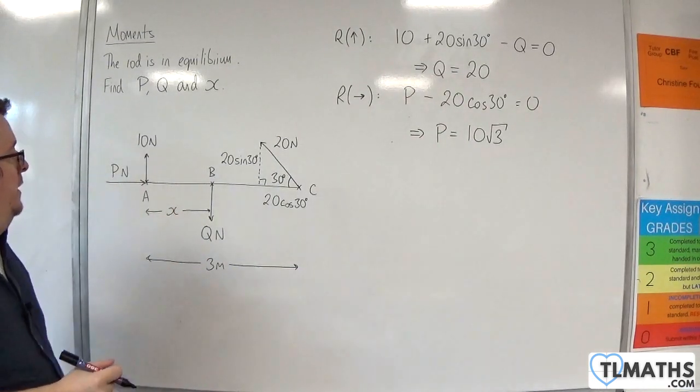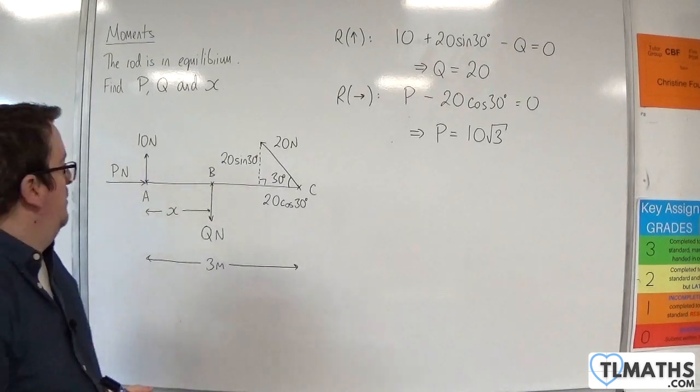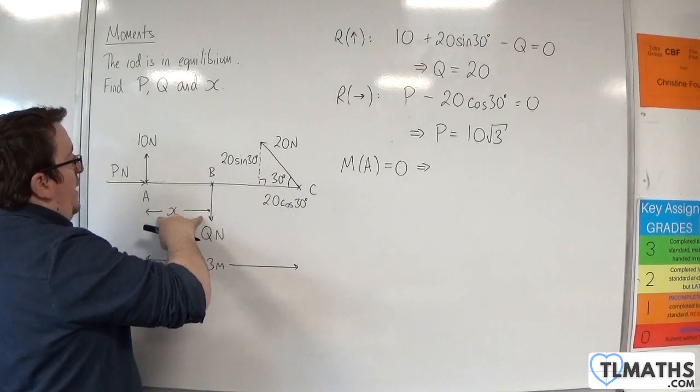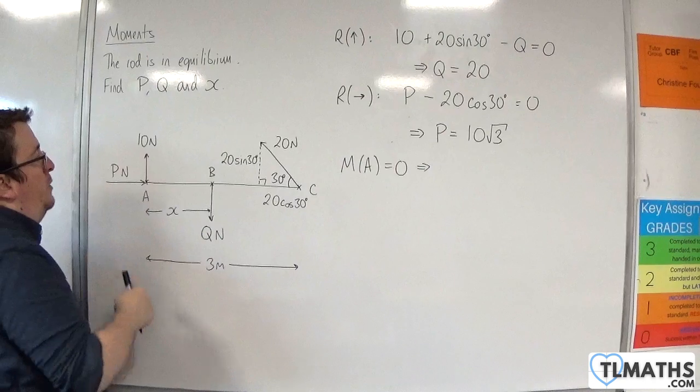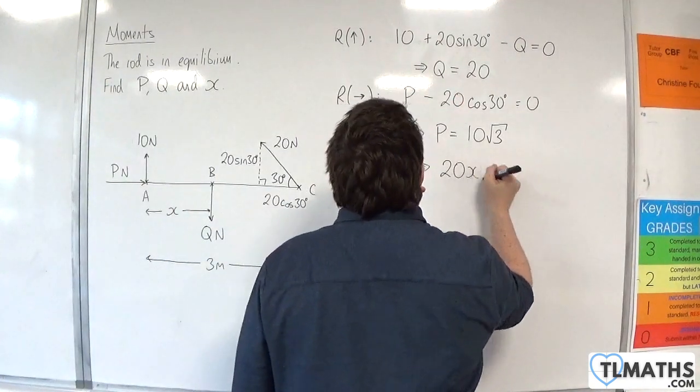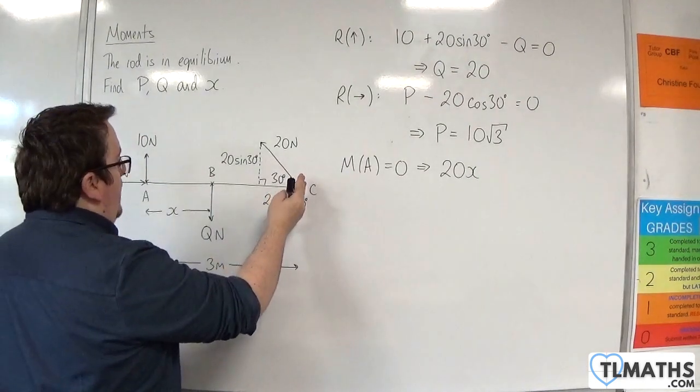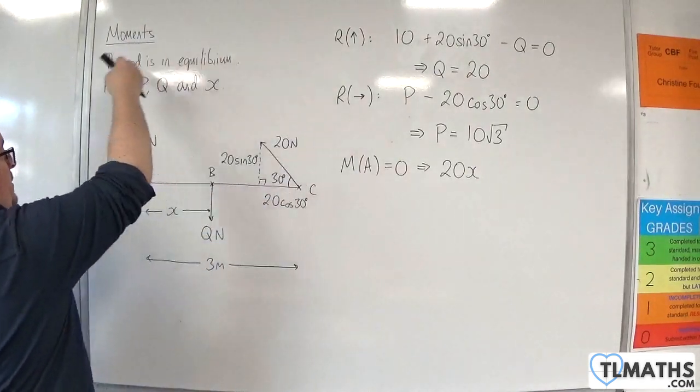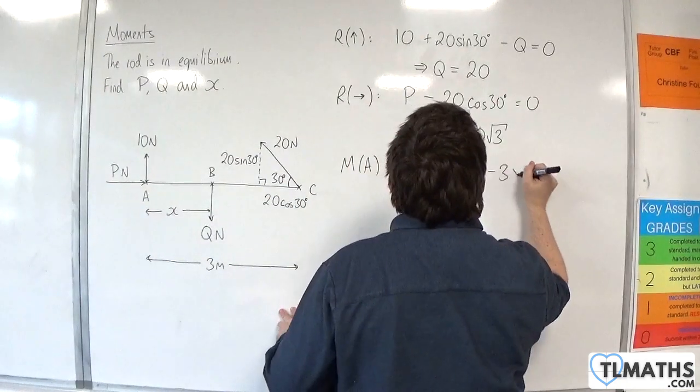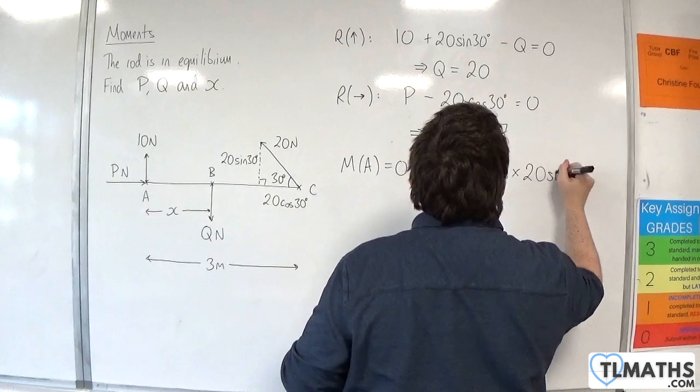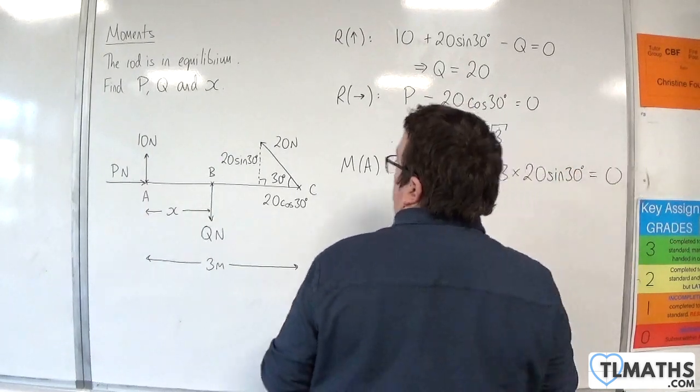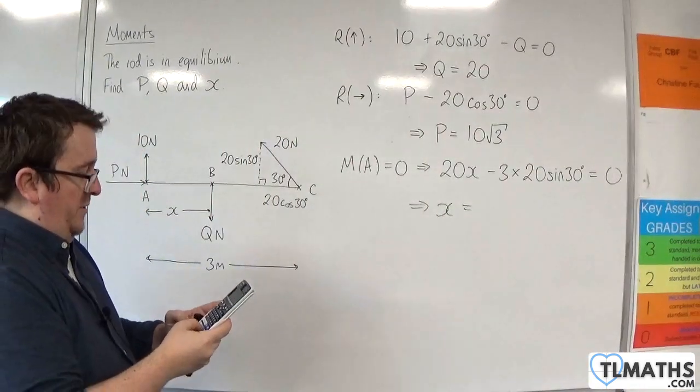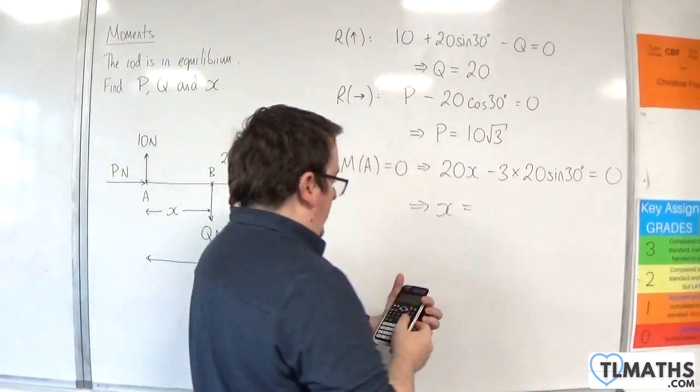Then we need to work out X. To do that, I'm going to have to take moments about a point. I'm going to take moments about point A. We are X distance, X meters away from the Q Newton force, which is going around in a clockwise motion. And so that's 20 times X. And we are 3 meters away from the vertical component of the 20 Newton force, and that's going around in an anticlockwise motion. So take away 3 times by 20 sine 30, and that's got to be equal to 0. We have 3 times 20 times sine of 30, and then we divide that by 20, and so we get 3 halves. So 1.5 meters.